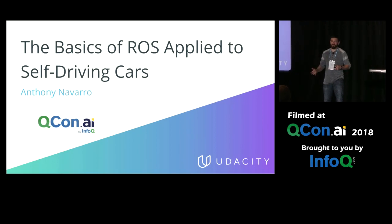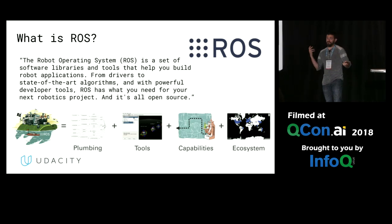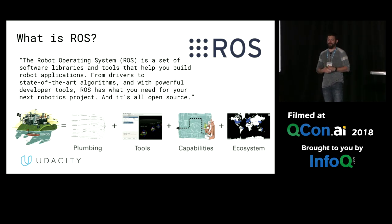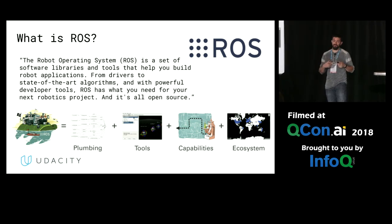We're going to talk a little bit about the basics of ROS for self-driving cars. This is really beginner because it's a 10-minute talk. If you're not familiar with ROS, it's the Robot Operating System, and it's not an operating system at all. It's more of a framework and a middleware for robotics applications. It's open source, which is great because you can add things to it, you can see how people are implementing things, and you can make your changes. It gives you a whole suite of tools to use to get you started quickly.